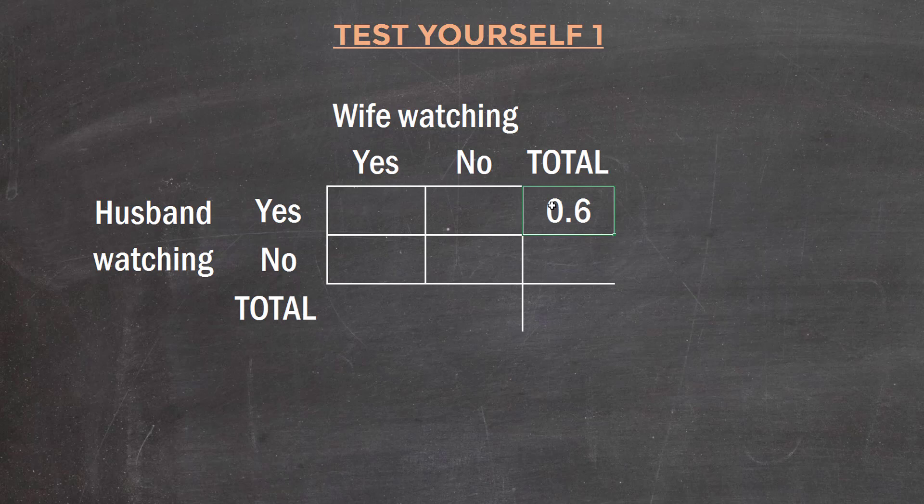Appreciate that that piece of information was a simple probability, not a joint probability. It didn't mention anything about the wife at all. And because that's 0.6, we know this must be 0.4, totaling one.